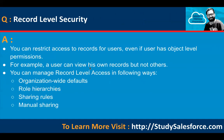What is record-level security? You can restrict access to records for users, even if the user has object-level permissions. For example, a user can view their own records but not others'. You can manage record-level access in four ways: organization-wide defaults, role hierarchy, sharing rules, and manual sharing — to open up permissions progressively.